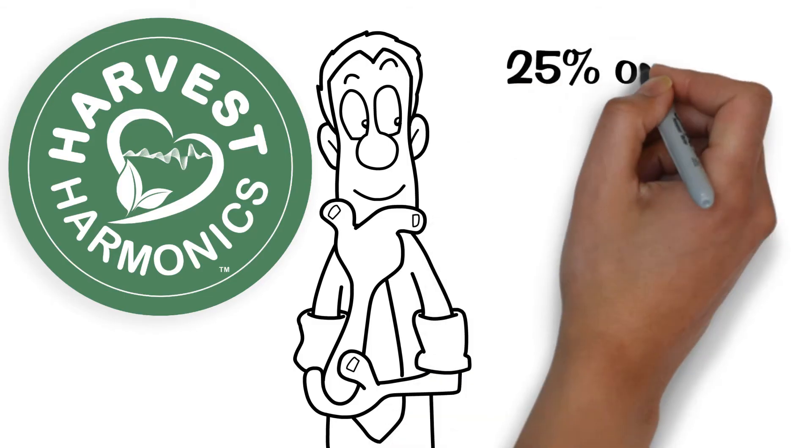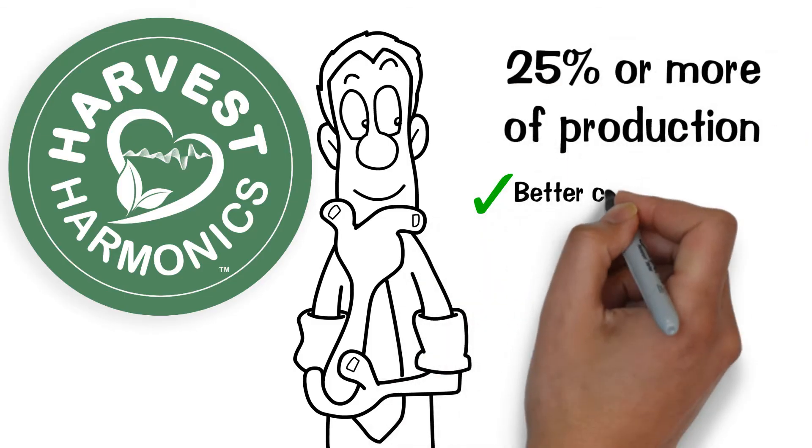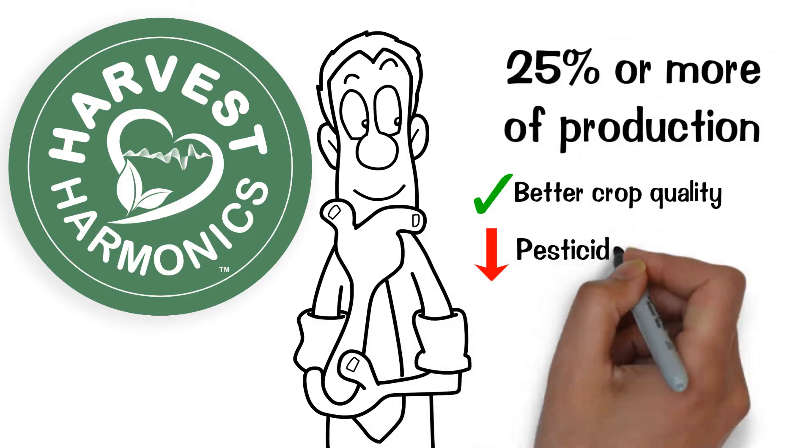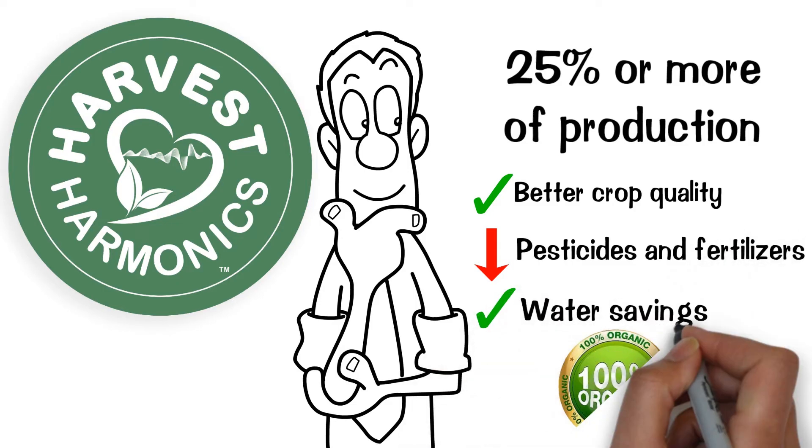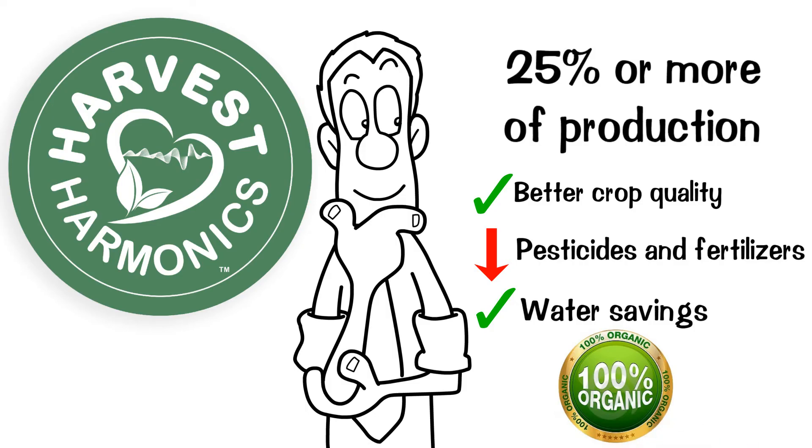Think of the advantages that Harvest Harmonics provides you with this technology. What would you do with 25% or more of production? Better crop quality, lower use of pesticides and fertilizers, even water savings, and all that with a system that pays for itself and is 100% guaranteed and organic.